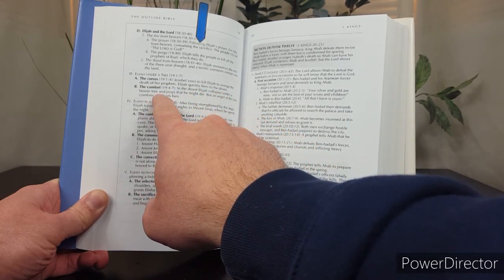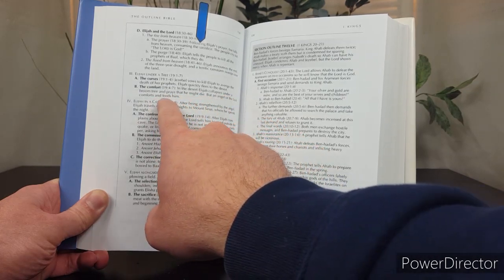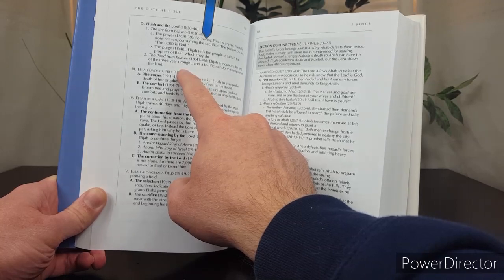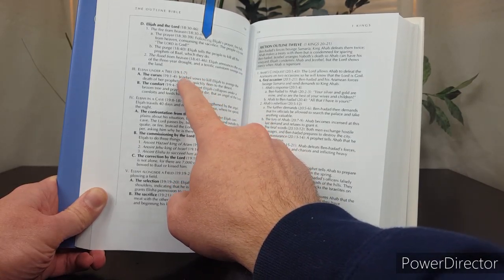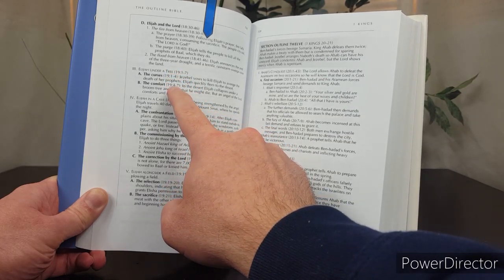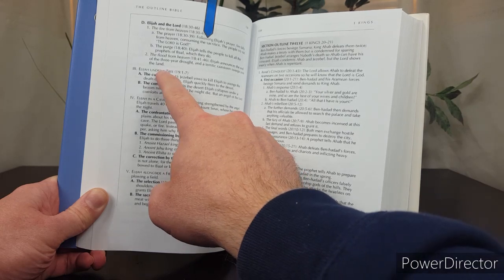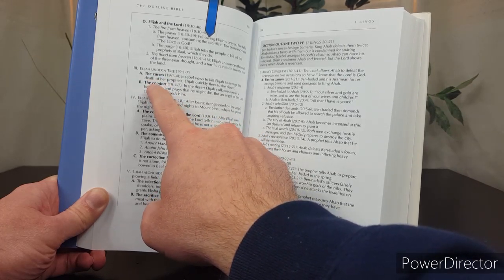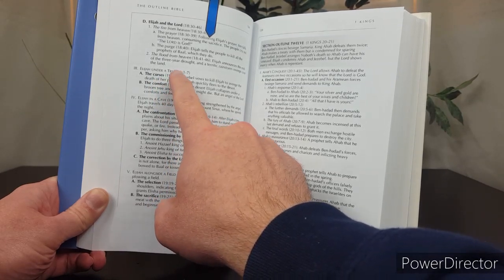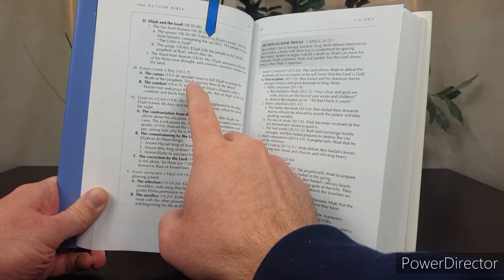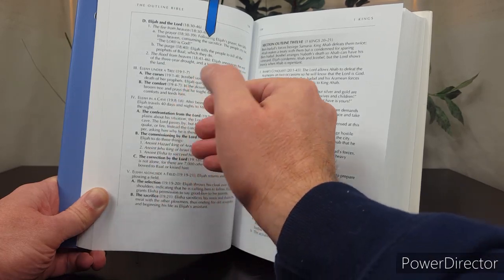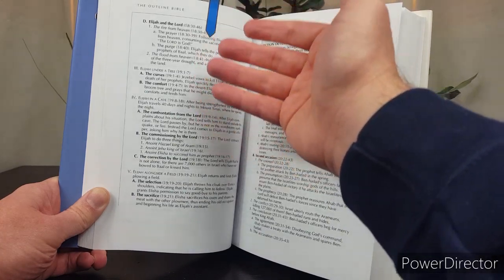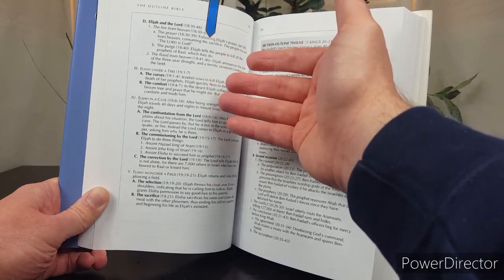In the desert, Elijah collapses under a broom tree and prays that he might die. But an angel of the Lord comforts and feeds him. So, just by looking at that example alone, you can see that Wilmington organizes these seven verses in a very helpful way. The first four verses are talking about the curses. The second four verses are talking about the comfort. So, he uses, this is called alliteration when he's using the same letter to the curses and the comfort, both words start with C. In a lot of his outlines, he uses alliteration, which some people find very helpful when listening to a sermon or listening to a lecture because it helps the hearer remember what's said. That's what studies suggest. The alliteration can help people retain what is being said.